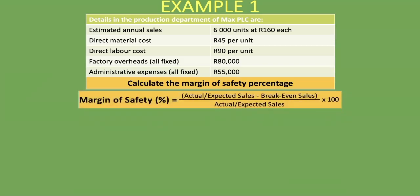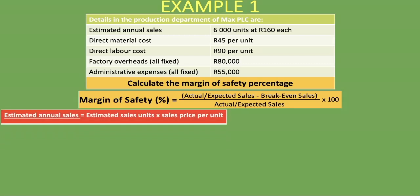Let's bring up our formula once more: actual or expected sales minus break-even sales, divided by expected or actual sales, multiplied by 100. Now let's work on getting the elements we need. First, the actual or expected sales — we're told the estimated annual sales is 6,000 units at 160 rand. Our expected sales value is estimated sales units multiplied by the sales price per unit.